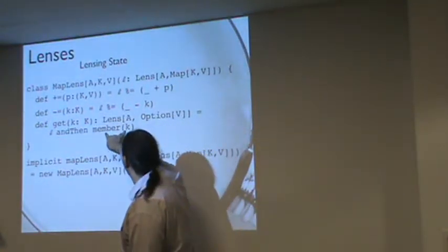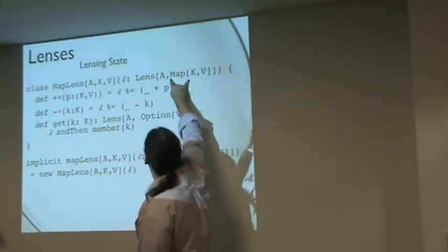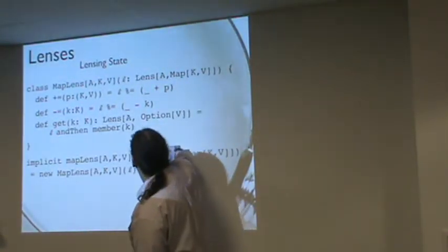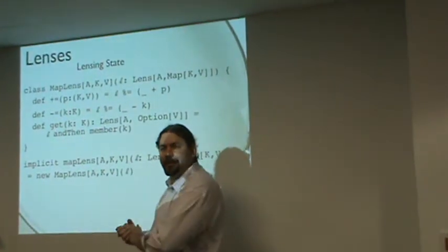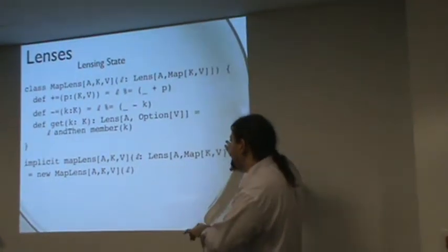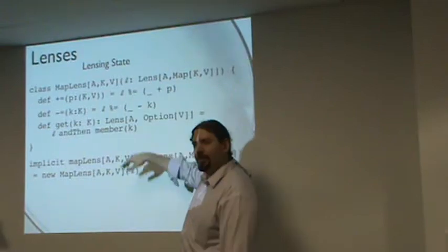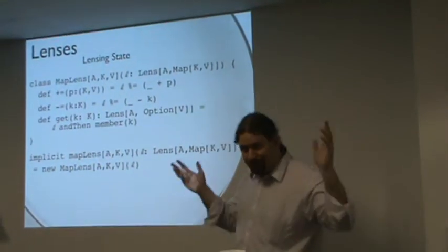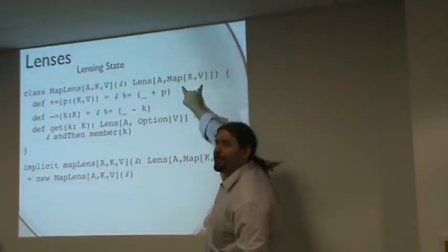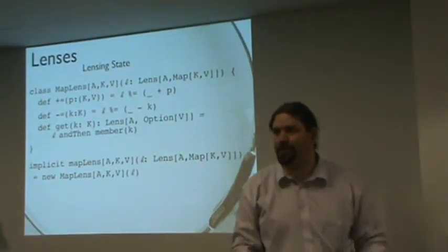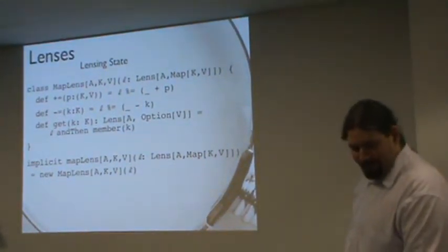This knew how to get me from a map KV to an option V. And L knows how to get me from an A to a map KV. So I can go from here to here and then use member K to go all the way to the answer I want. And we decompose these. And now the type of my lens will actually tell plus equals to do the right thing. It will choose between this plus equals or the numeric one. And it will be completely unambiguous because the target of the lens is different in each case. So the implicits don't fight with each other.